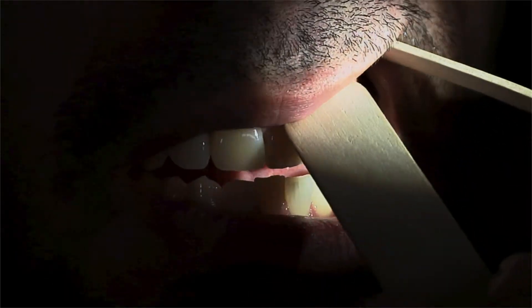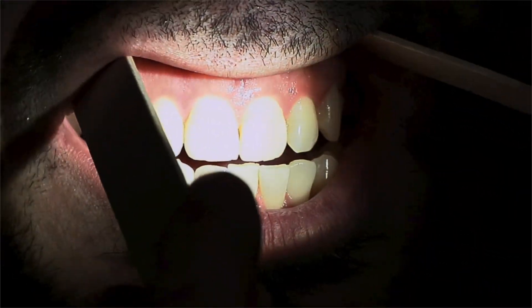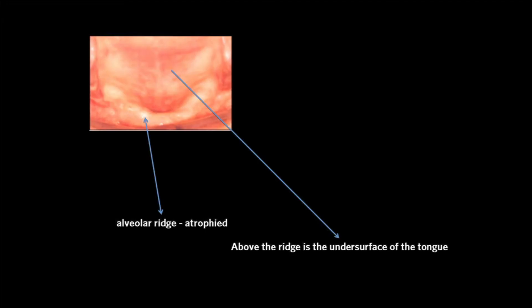Examine the teeth for status. If the patient wears dentures, they should be removed to allow complete evaluation of the oral cavity, specifically to evaluate the mucosa and the alveolar ridge, which is often atrophied in patients who have dentures.